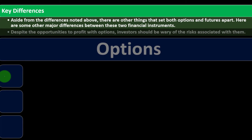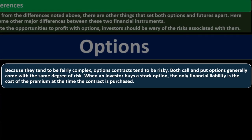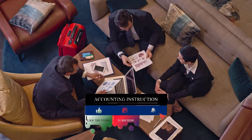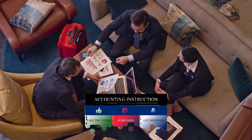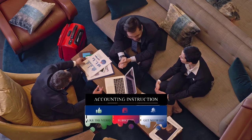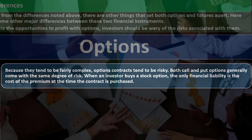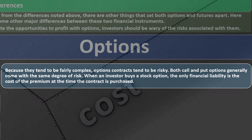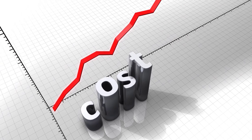Aside from the differences noted above, here are other major differences between options and futures. Despite opportunities to profit, investors should be wary of the risks with options, as options contracts tend to be complex and risky. Derivatives are a step away from the actual valuation of underlying assets, adding complexity. Both call and put options generally carry the same degree of risk. When an investor buys a stock option, the only financial liability is the cost of the premium at the time of purchase.